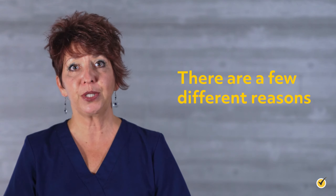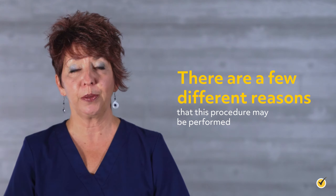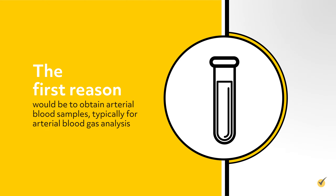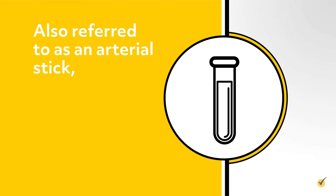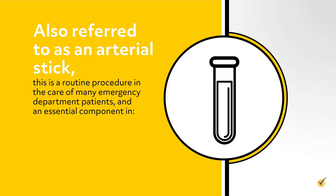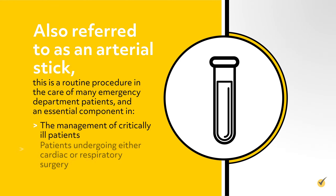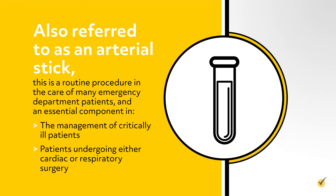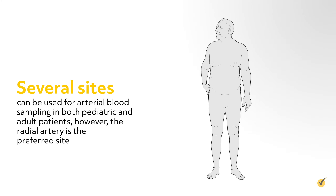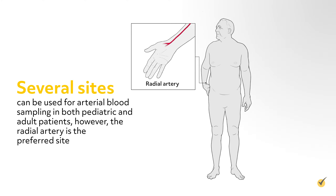There are a few different reasons that this procedure may be performed. The first reason would be to obtain arterial blood samples, typically for arterial blood gas analysis. Also referred to as an arterial stick, this is a routine procedure in the care of many emergency department patients and an essential component in the management of critically ill patients and patients undergoing either cardiac or respiratory surgery. Several sites can be used for arterial blood sampling in both pediatric and adult patients; however, the radial artery is the preferred site.